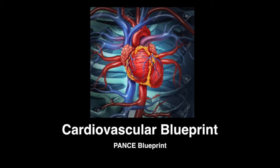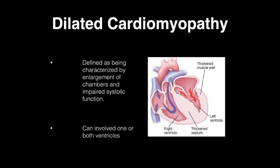The first section on the cardiovascular section of the Blueprint is cardiomyopathy. There are three basic cardiomyopathies you need to be familiar with when taking the NCCPA: dilated cardiomyopathy, restrictive cardiomyopathy, and hypertrophic cardiomyopathy. Each one has its own intricacies and things worth remembering.